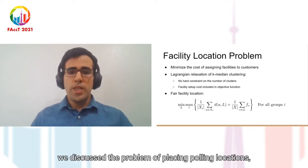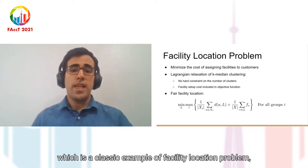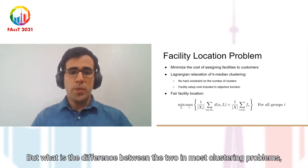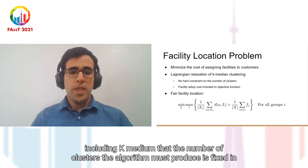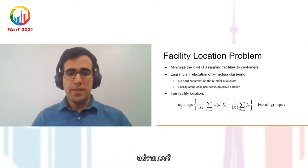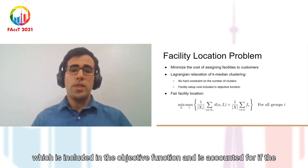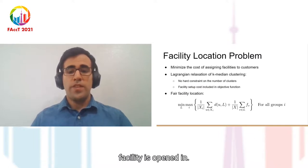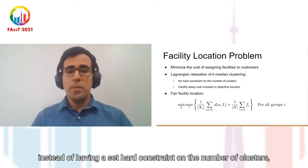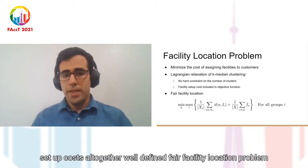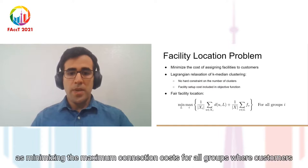Earlier in this presentation, we discussed the problem of placing polling locations, which is a classic example of facility location problem, a problem closely related to K-median clustering. But what is the difference between the two? In most clustering problems, including K-median, the number of clusters the algorithm must produce is fixed in advance. But in facility location problem, each facility has an associated setup cost, which is included in the objective function and is accounted for if the facility is opened. In other words, instead of having a hard constraint on the number of clusters, the optimization problem would be to minimize the sum of distances and facility setup costs altogether.